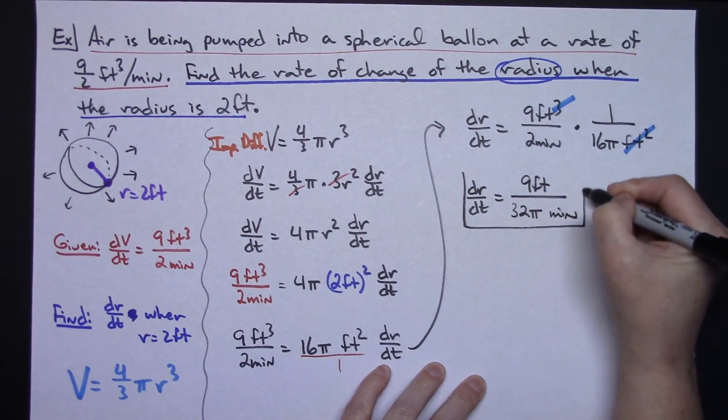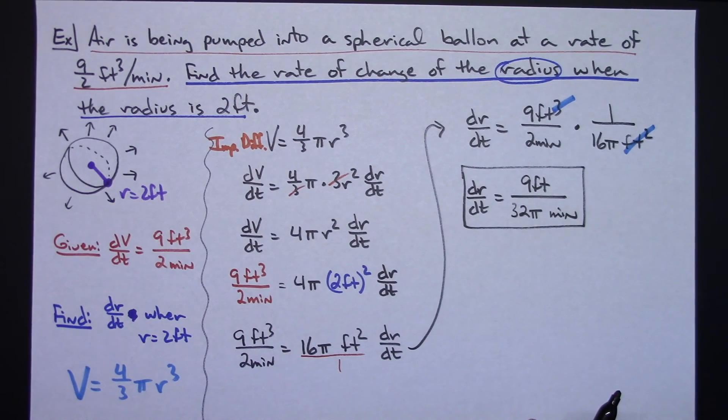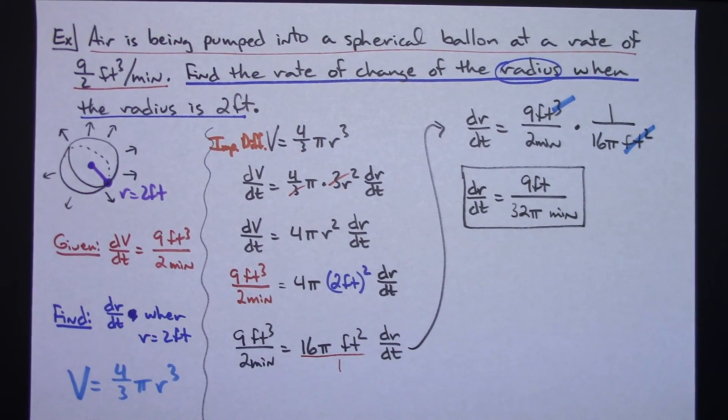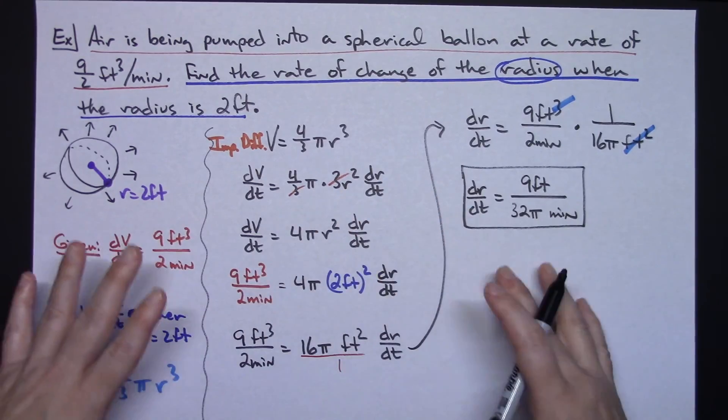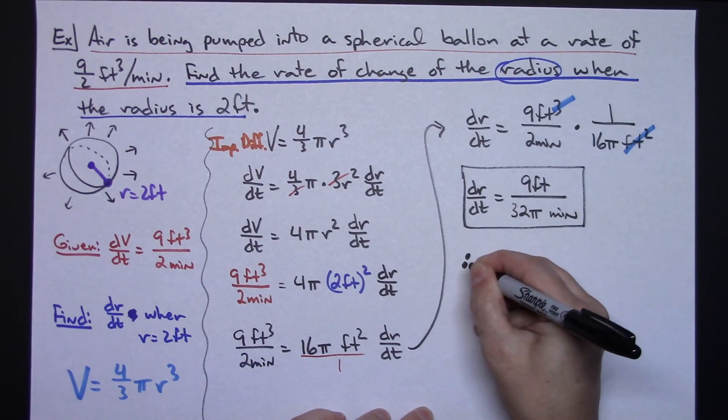So there we have solved for dr/dt when the radius was at 2 feet. And then generally I always would have my students write a therefore statement just kind of summing up what the whole entire problem involved here. So we could say something like, therefore,